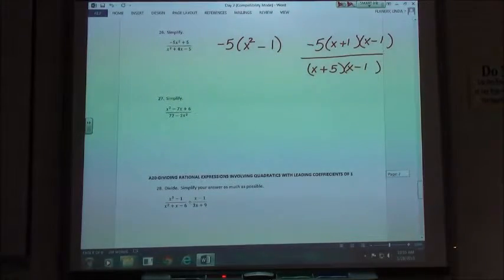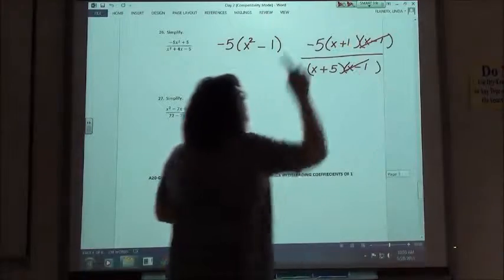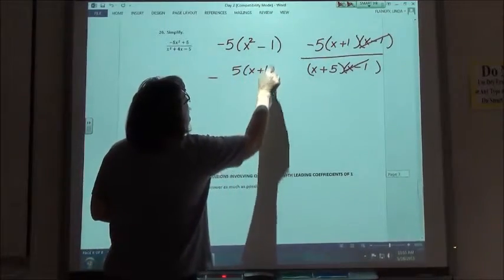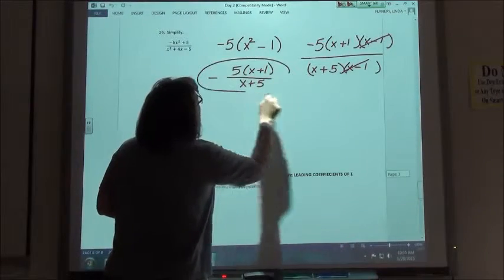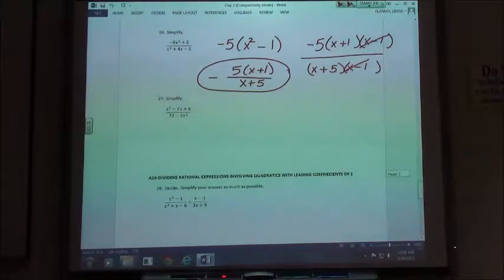In this case, our x minus 1's are both the same, we can go ahead and cancel those out. So we're going to have negative 5 times x plus 1 over x plus 5. And again, that negative could be out in front of your fraction, or if you want, you can leave it up there with the 5, it shouldn't make any difference.